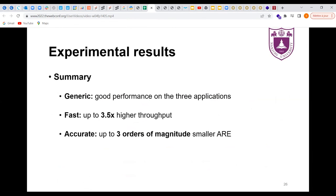The experimental results show that our framework is generic. It has good performance on the three applications: HH, TH, and PP. Our framework is fast. It can have up to 3.5 times higher throughput. Our framework is accurate. It can have up to three orders of magnitude smaller ARE.